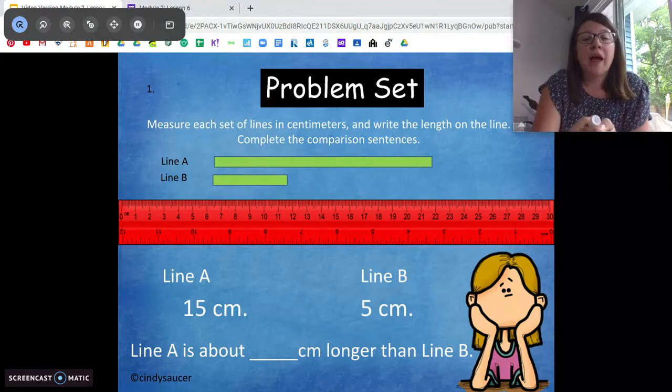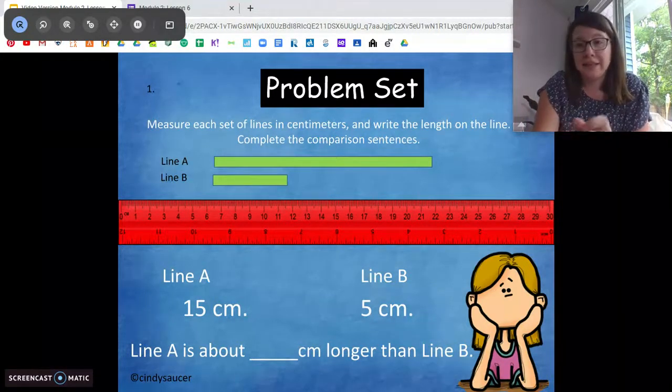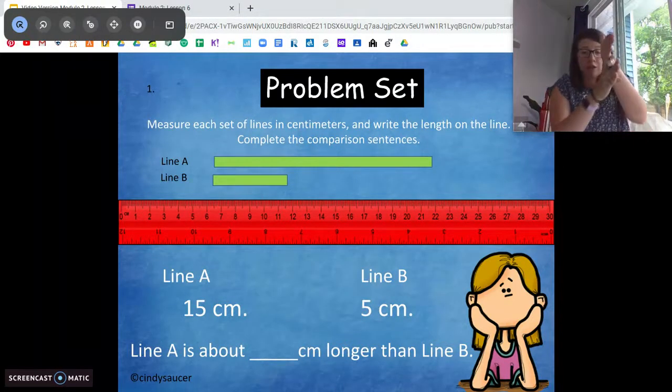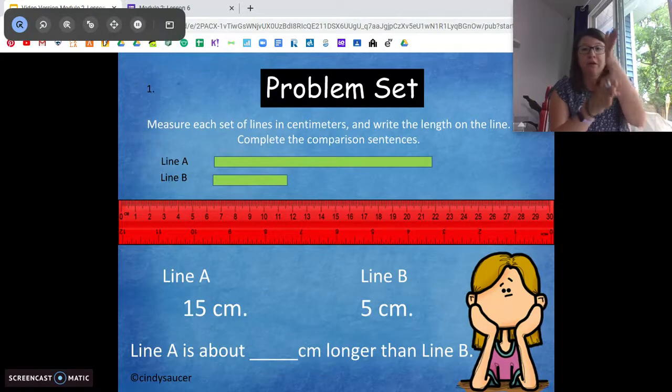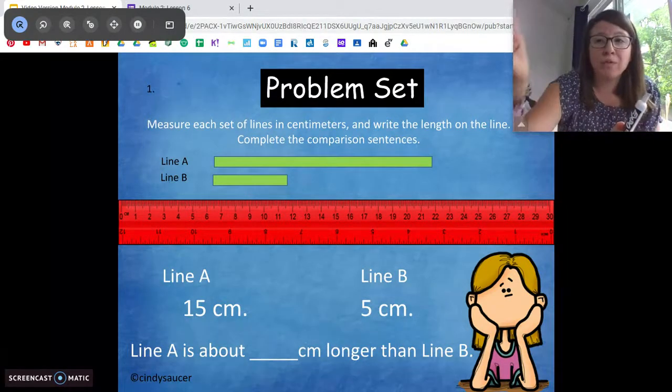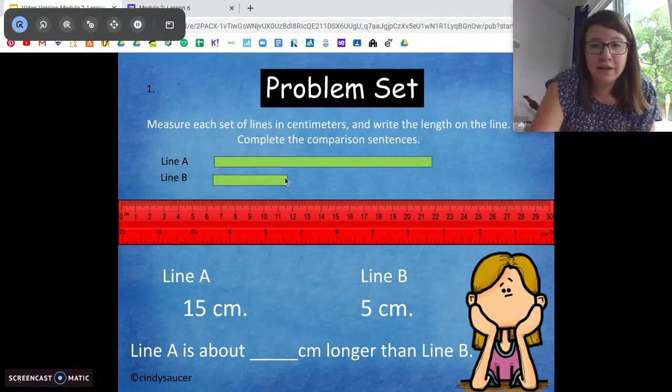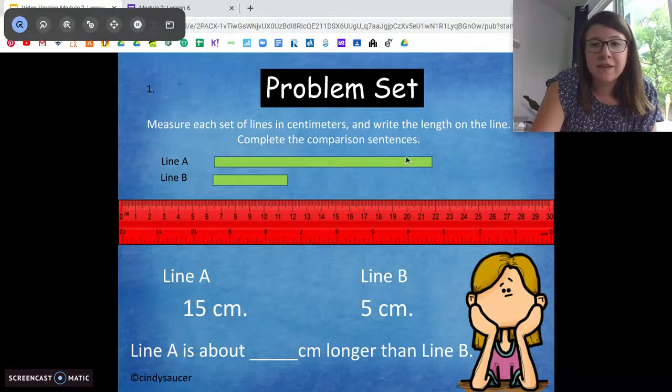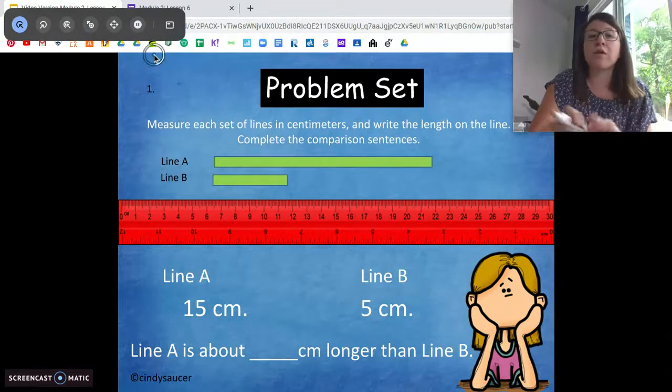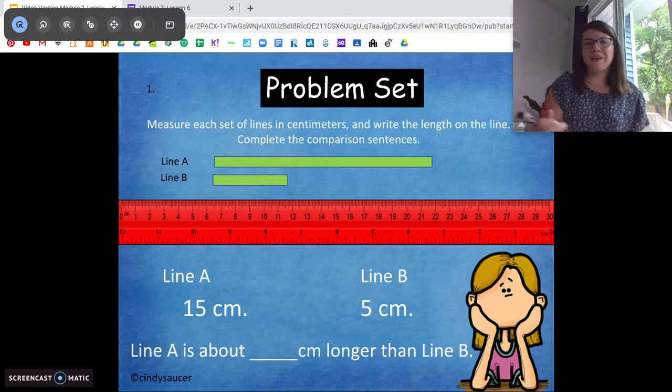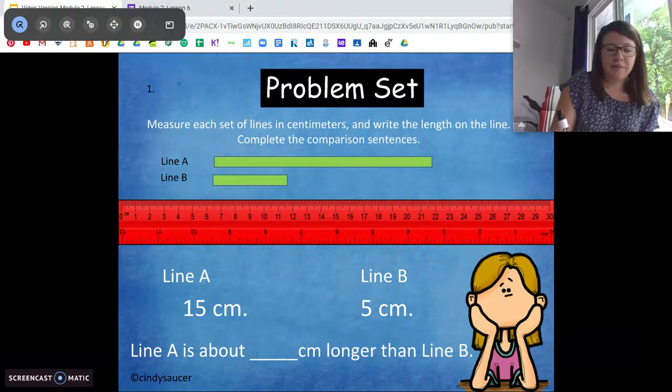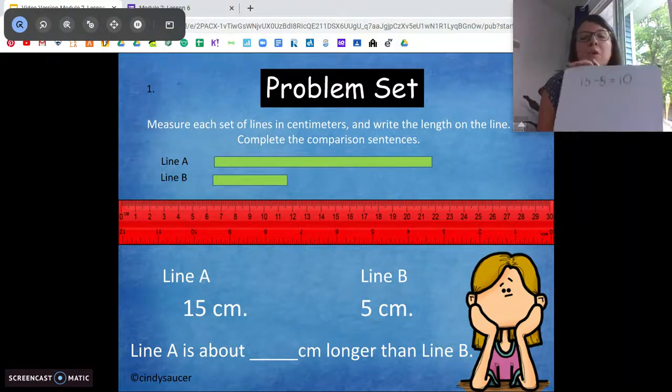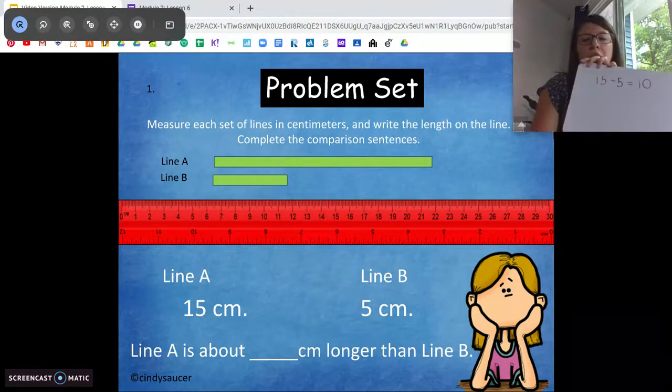So now our next step is figuring out how much longer line A is than line B. There are a couple different ways to do this. These two lines are lined up on our ruler. They have the same end point. So what we can do is count the space, count the centimeters in between the two lines right here. We can go like this. One, two, three, four, six, seven, eight, nine, ten. We can count the centimeters or we can set up a subtraction problem. We can say 15 minus five equals one. And we still get 10. So line A is about 10 centimeters longer than line B.